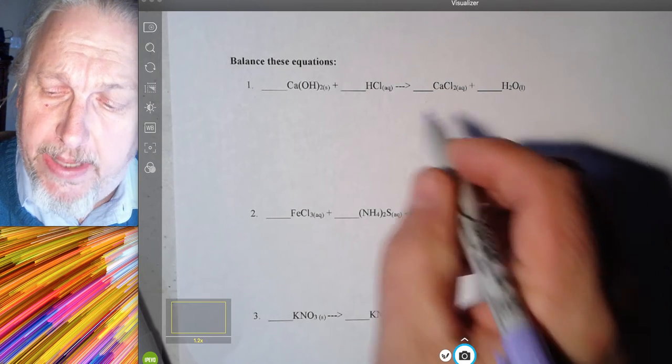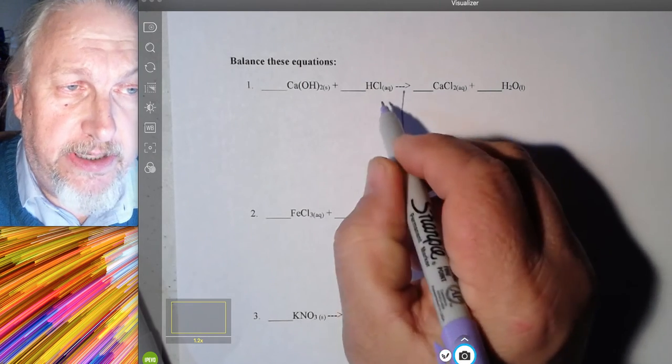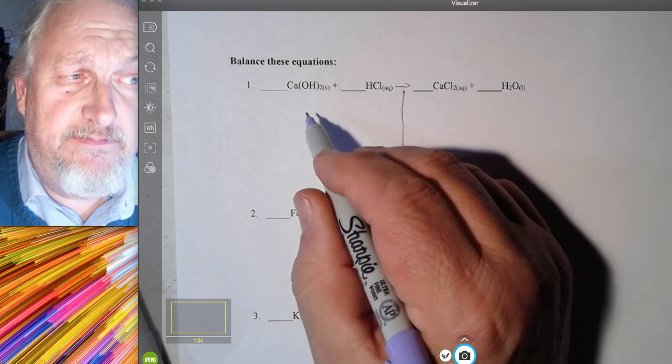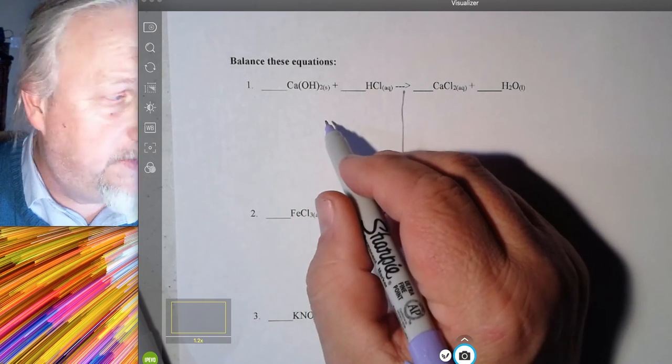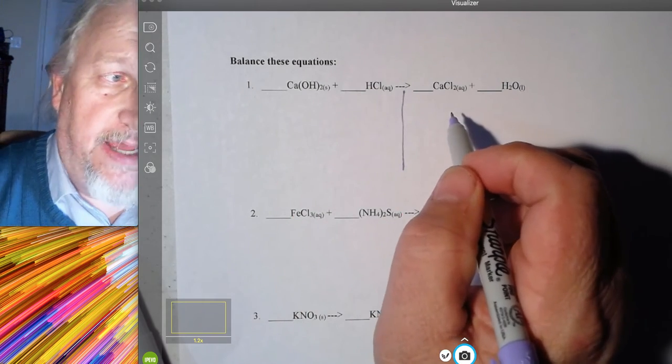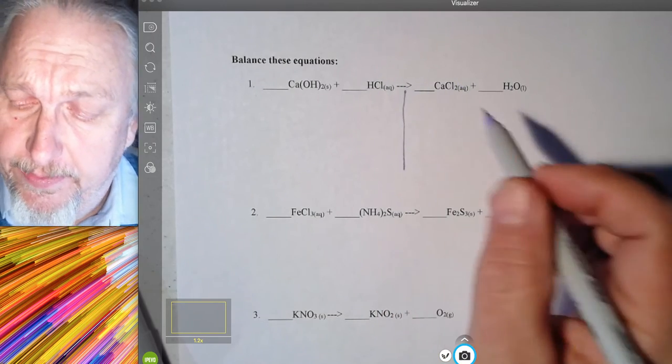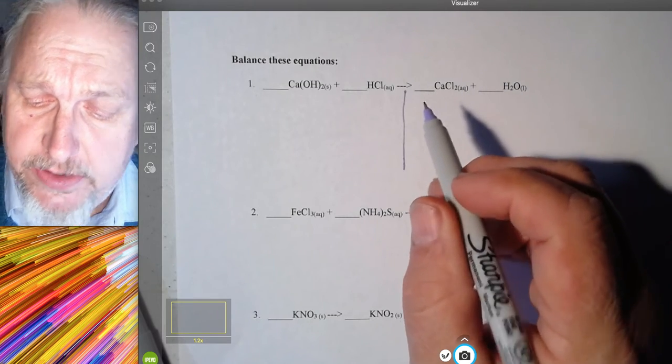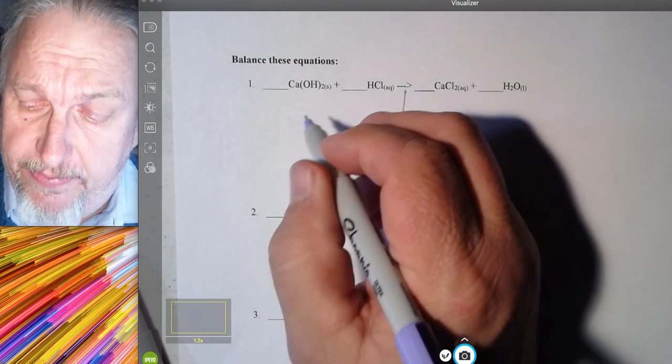So to balance reaction, what we're trying to do is to get what's on the left or the reactive side to get the same number of molecules, the same number of particles, on the left side as you do on the right side. Same number as you do on the right side. So there's a couple ways to do this. I showed some of y'all the circle method. I'm going to do this one with the circle method.